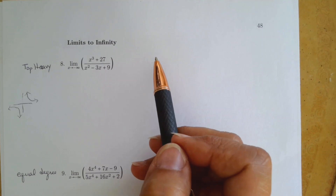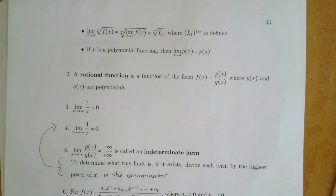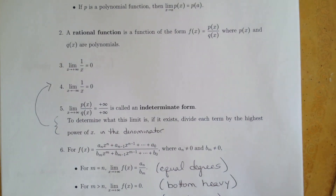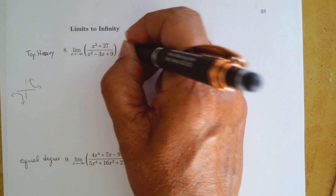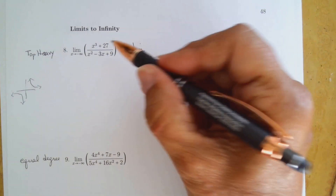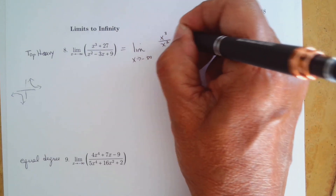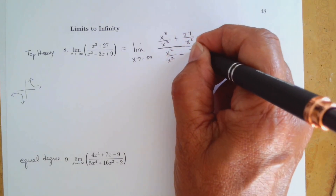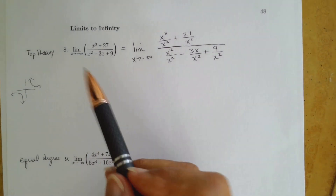Number 8 is top heavy, which means my answer is going to be plus or minus infinity. The rule says: take each term in the problem and divide it by the highest power of x in the denominator. The highest power of x in our denominator is x squared. So we take the limit as x goes to negative infinity and divide each term by x squared: x cubed over x squared, 27 over x squared, x squared over x squared.